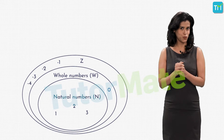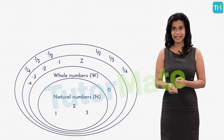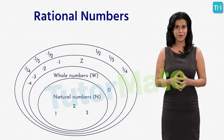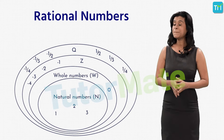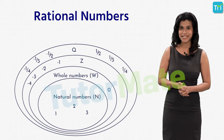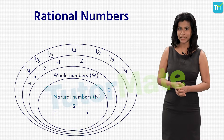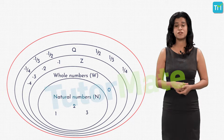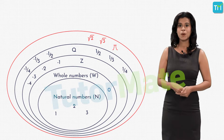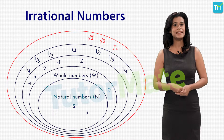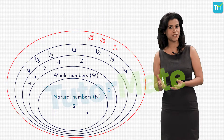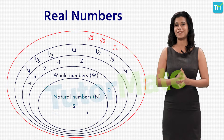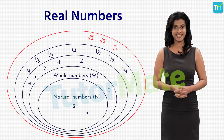You must have studied fractions too, which come between the integers. On including them, we get a group called rational numbers, which can be expressed in the form p/q, where p and q are integers and q (the denominator) is not equal to 0. Finally, all the numbers that cannot be expressed as p/q are called irrational numbers. The complete set of rational and irrational numbers together are called real numbers.